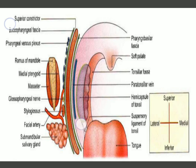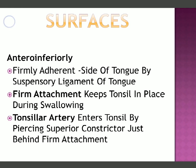The lateral surface is firmly attached anteroinferiorly with the help of the suspensory ligament. In this figure you can see the suspensory ligament at the anterior inferior portion. The tonsil is firmly adherent to the side of the tongue by this ligament, which keeps the tonsils in place during swallowing. The tonsils can be surgically accessed by piercing the superior constrictor just behind this firm attachment.